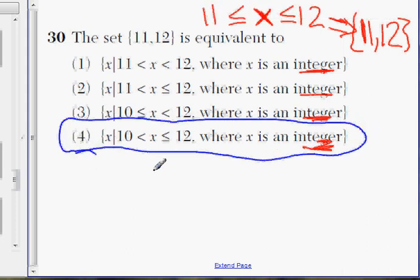Choice 4 means the same thing: x is greater than 10 and less than or equal to 12, where x is an integer. What numbers is greater than 10 that is an integer? The first number has to be 11. We're not dealing with fractions and decimals. You can't say 10.2 or 10.3. It needs to be whole numbers, integers.